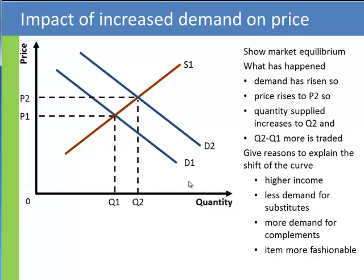Okay, here's the key point. When I drew this demand curve, D1, I assumed that income, substitutes, complements, fashion — all these factors were being held constant. And in fact, the only thing that could change was price. The reason why this demand curve has shifted to the right? One of these items has changed.